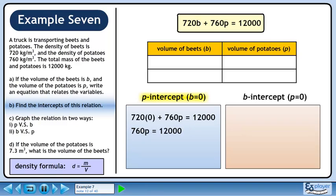This gives us 760p equals 12,000. Divide both sides by 760. This gives us p equals 15.8. Let's record the p-intercept in the table and move on to the next intercept.